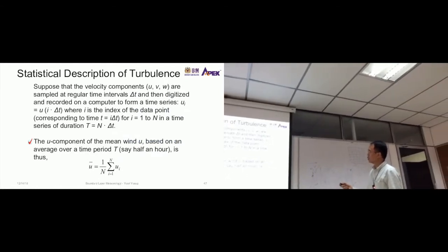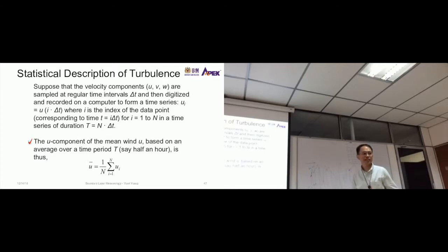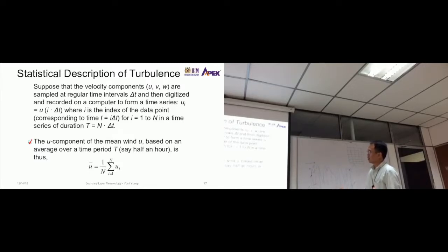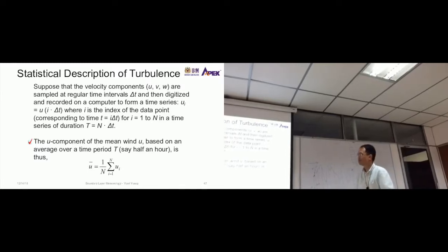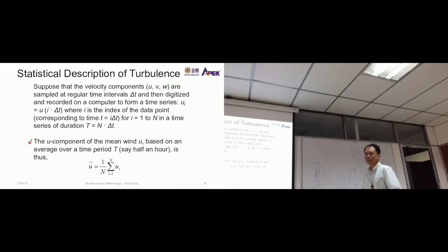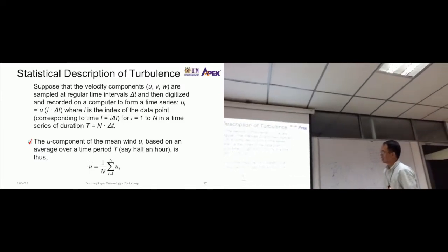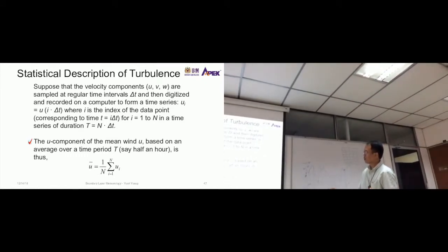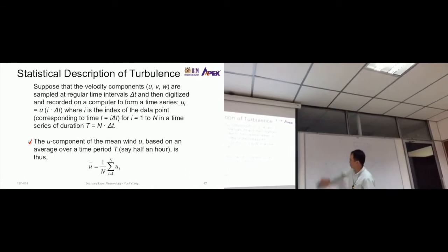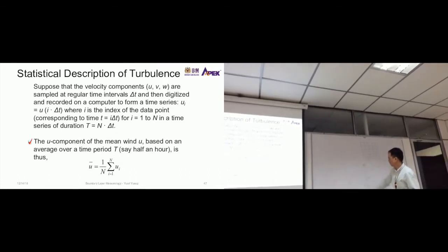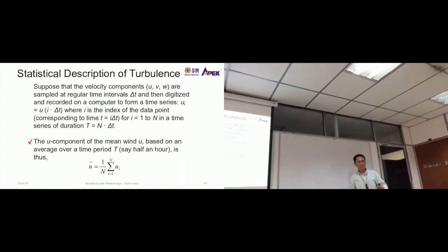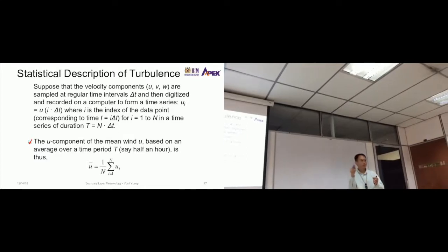Suppose the velocity components u, v, and w are sampled at regular time intervals delta t — say one second. Every second you measure u, v, w and digitize and record it on a computer to form a time series u_i, v_i, w_i, where i is the index of the data point corresponding to time t. This runs from 1 to n, the length of the measurement in the time series. The u component of the mean wind is based on an average over a time period.